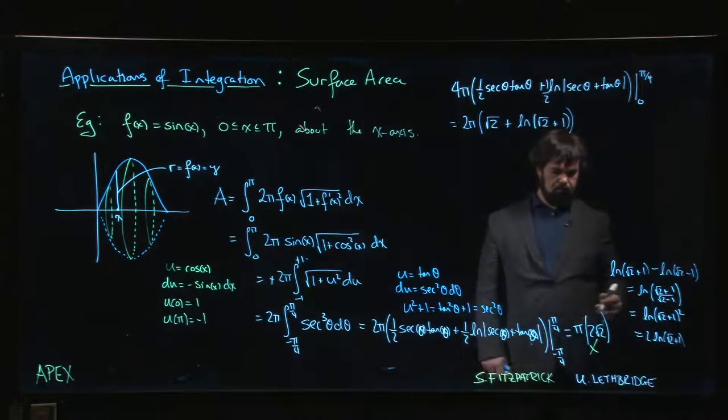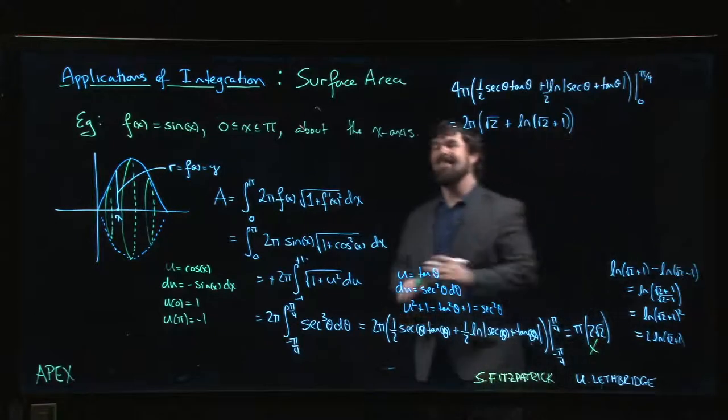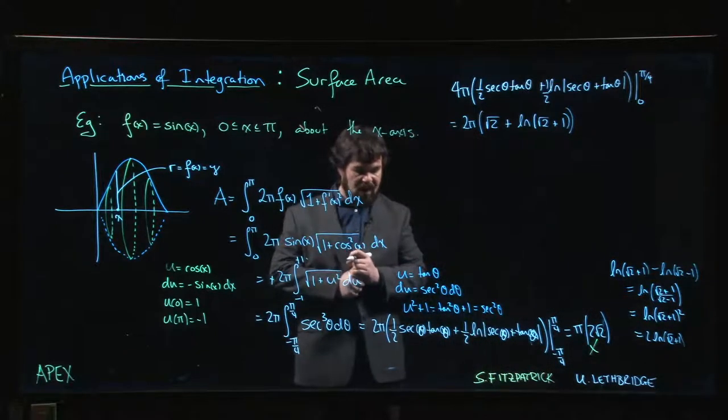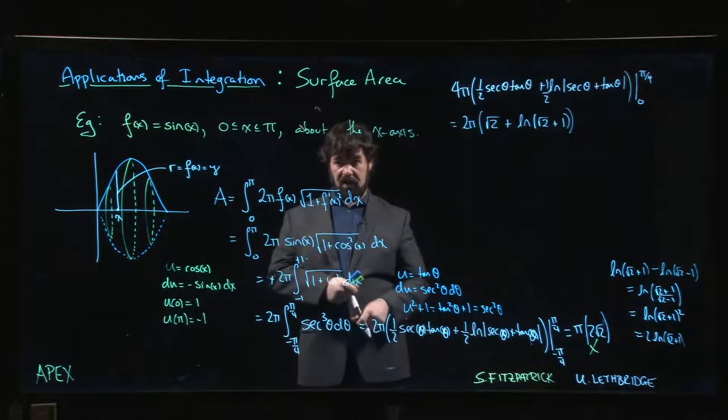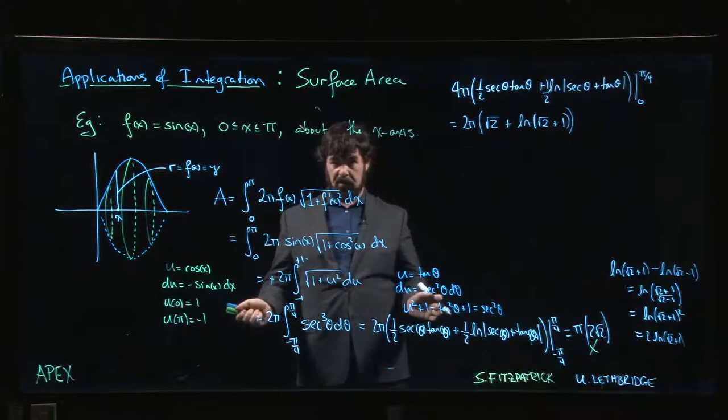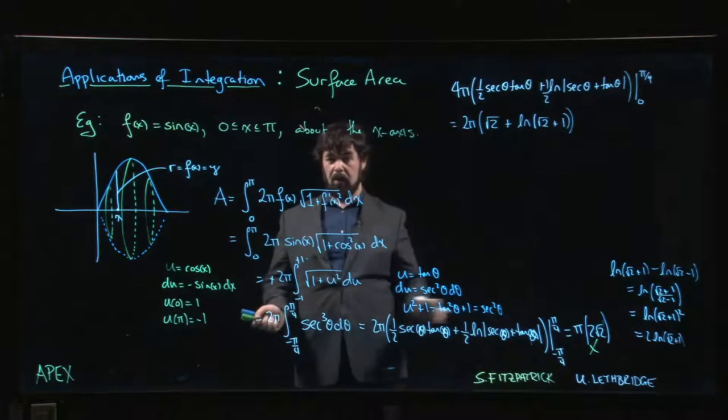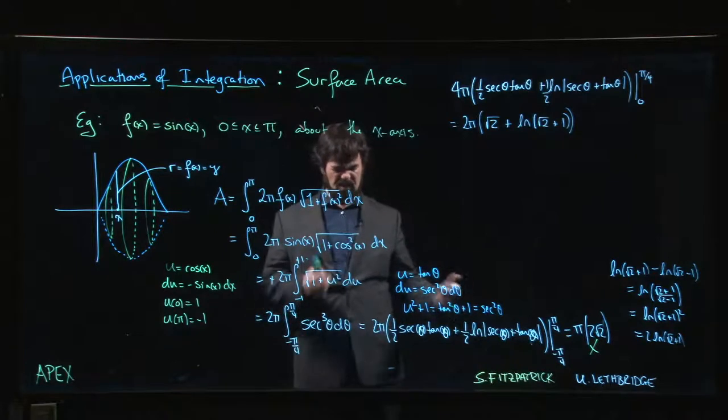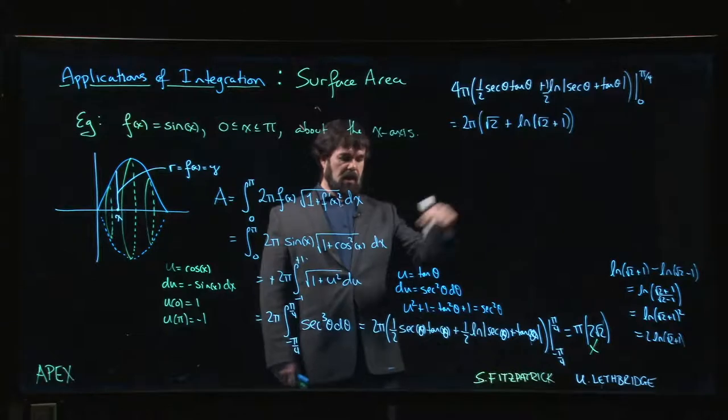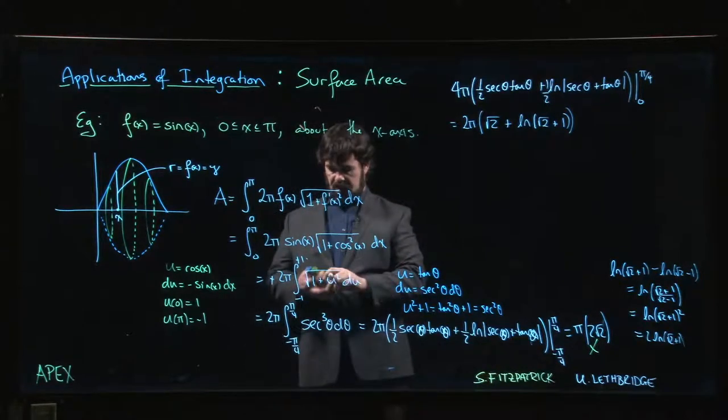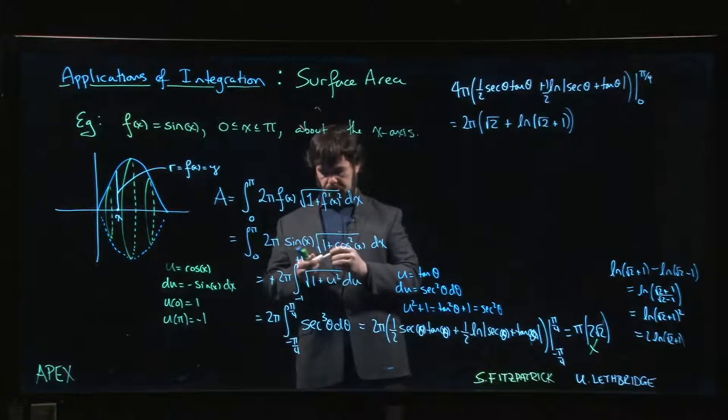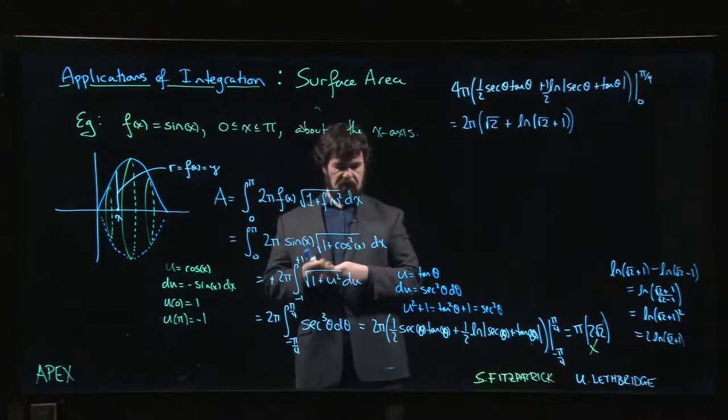It works out whichever way you want to do it. Now you probably haven't actually memorized the integral of secant cubed and don't want to go through the steps because it's multiple integration by parts, kind of ugly. Another alternative method once you get down to here is you could do a hyperbolic substitution.